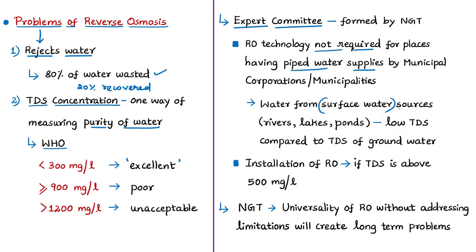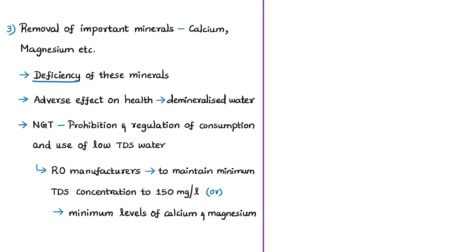Groundwater sources are essentially bore water. Since 80 percent of feed water goes as waste, RO systems are not required where supplied water has low TDS. The expert committee recommended that RO installation is advisable only for sources with TDS above 500 mg/L, which is the acceptable limit per Indian drinking water standards. NGT noted that RO has its space in high-TDS areas with multiple pollutants, but universal use creates long-term problems rather than short-term solutions.